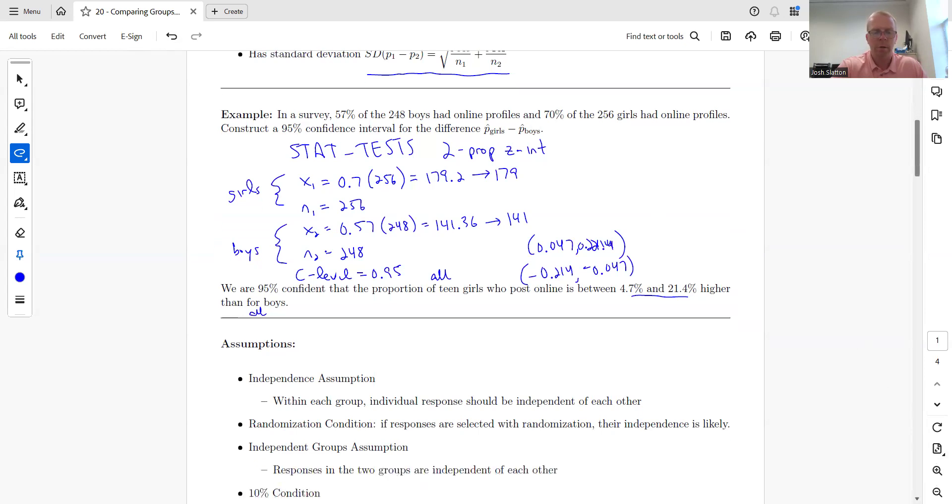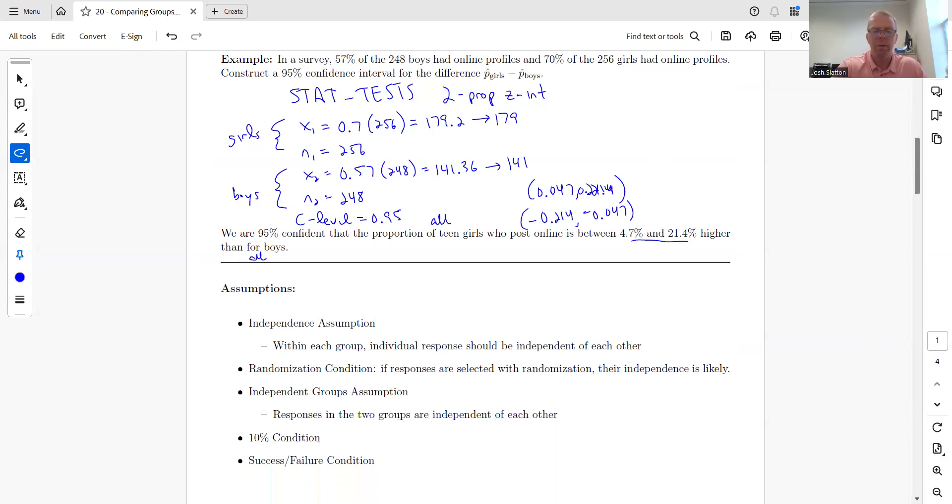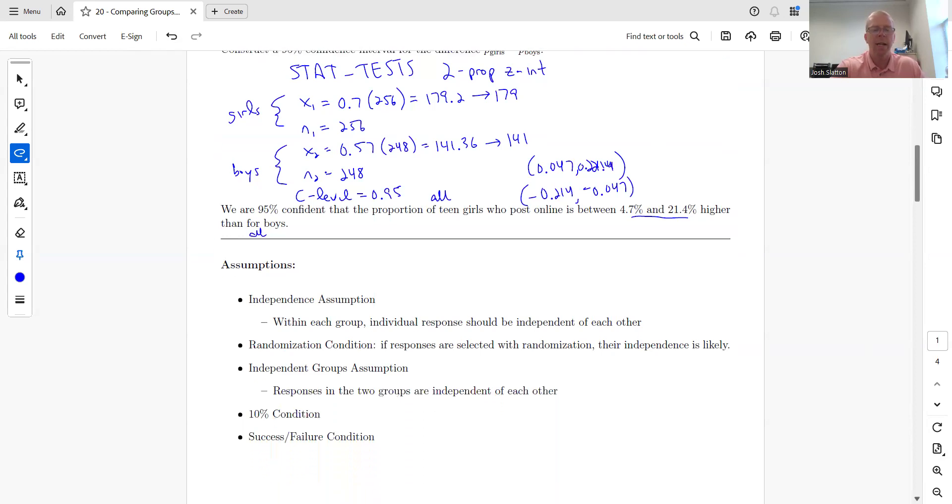Let's talk about assumptions. These are basically the same assumptions that we've talked about before, with the added—we have independence, randomization, 10% condition, success-failure condition. These are all the same. Now the one added one is the independent group assumption, so the responses in the two groups are independent of each other. The boys are not affecting the girls group in other words, and vice versa.